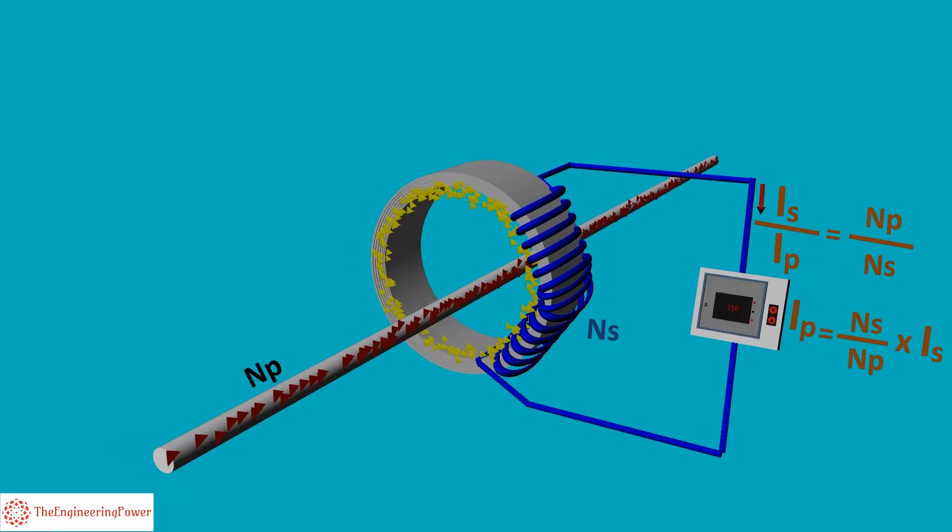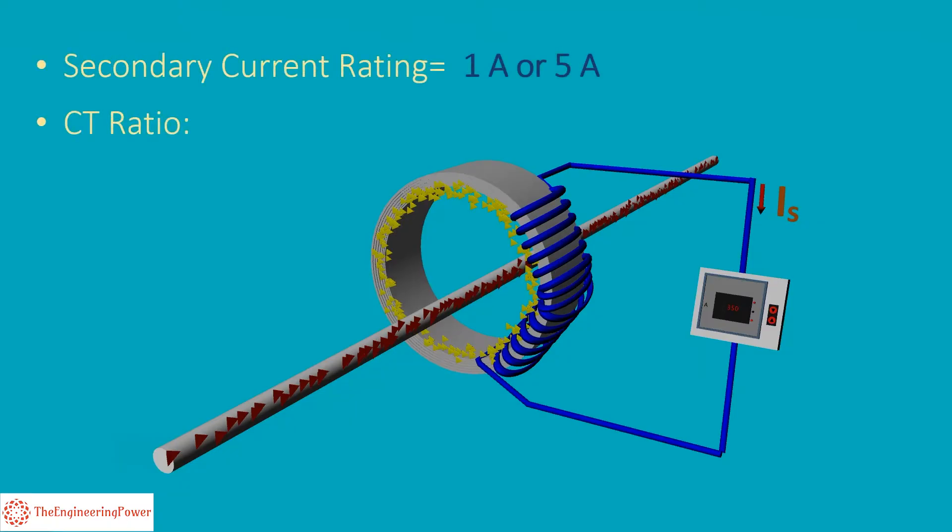So if we measure the secondary current, primary current can be calculated by using the above formula. Most CTs have a standard secondary rating of 1 Ampere or 5 Ampere. And the CT ratios are generally like 400 by 1, 800 by 5, 1200 by 5, etc.